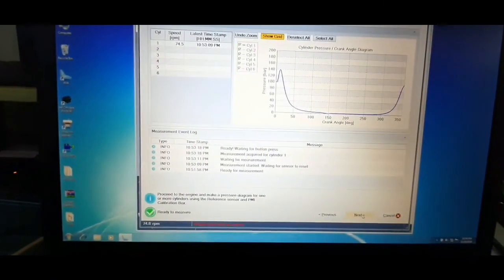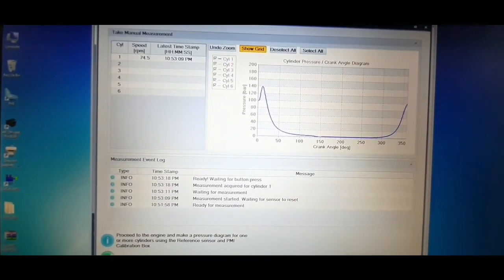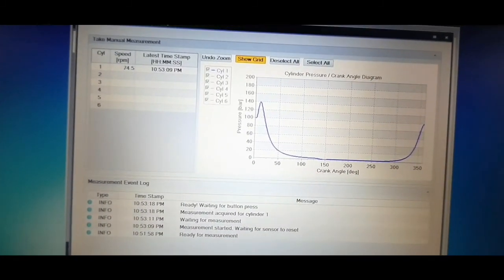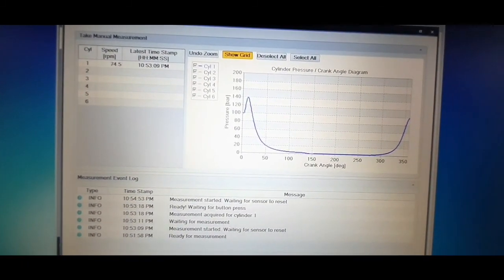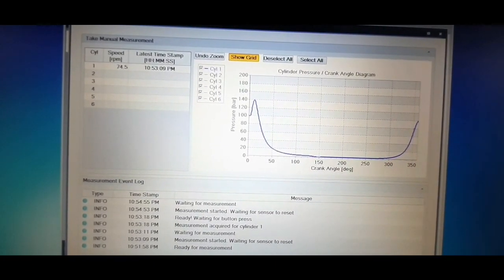A pressure versus crank angle diagram of the respective unit will be displayed on the screen. Now shut the indicator cocks and disconnect the transducer, and move to the next unit and follow the steps as explained earlier.